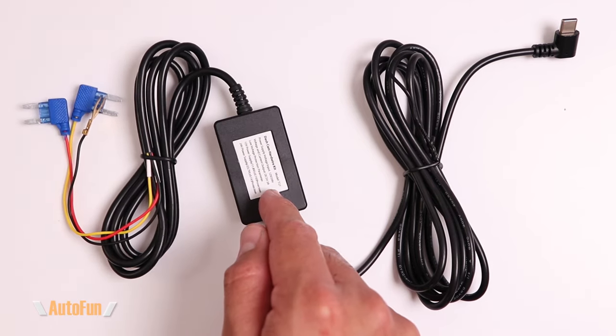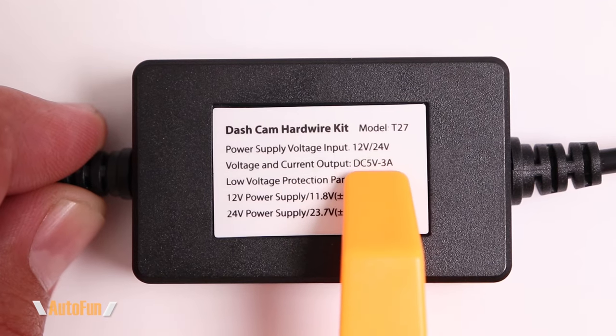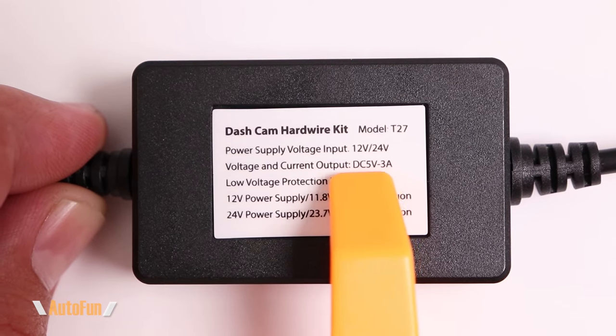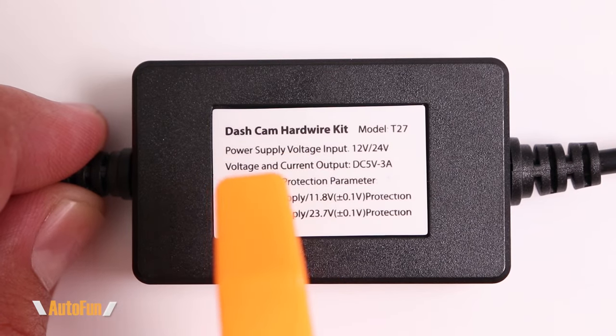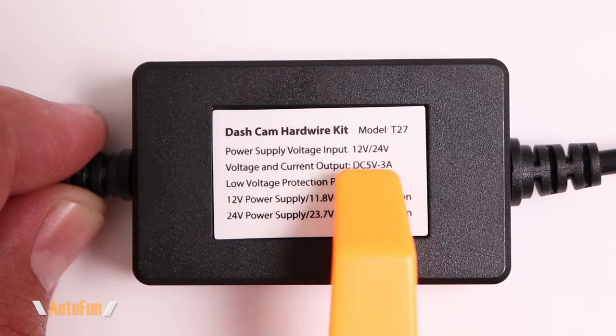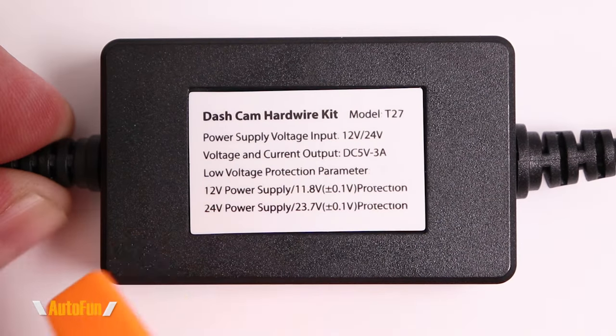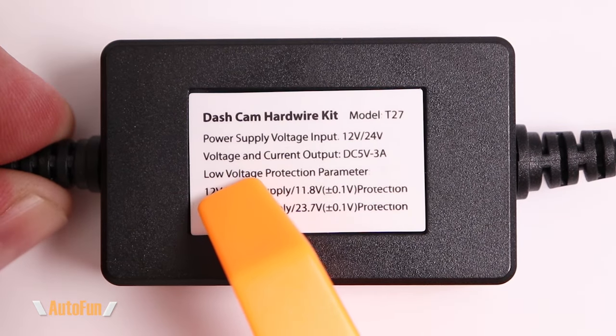The T27 hardwire kit is able to output three amps. Most mirror dash cams need 2.5 amps or more in order for them to function, so we have three amps here, more than enough power.